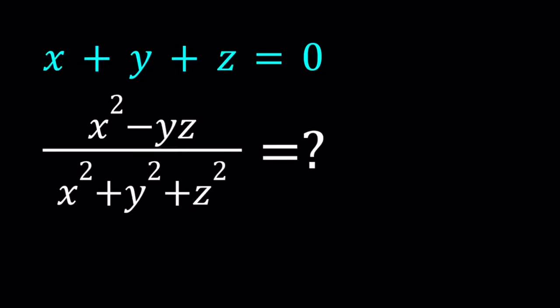Hello everyone. In this video, we're going to be evaluating an algebraic expression. We're given that x plus y plus z is equal to 0, and we're supposed to evaluate x squared minus yz divided by x squared plus y squared plus z squared. I'll be presenting two methods, and let's start with the first one.